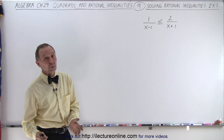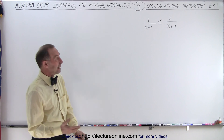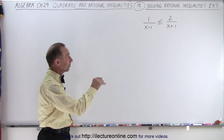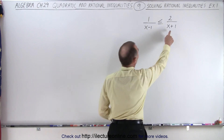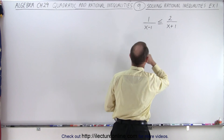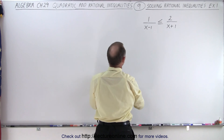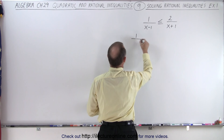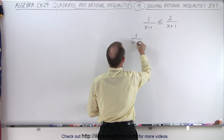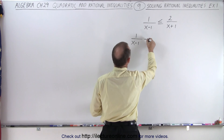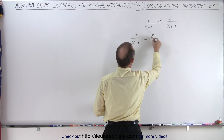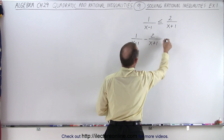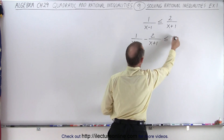Step number one: we need to move everything over to one side and have a zero on the other side. This is going to move to the left side, so this will be written as one over x minus one, minus two over x plus one, is less than or equal to zero.